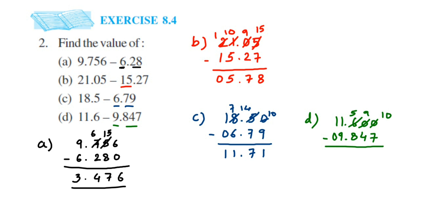This becomes 5, this becomes 9, and this becomes 10. 10 minus 7 is 3. 9 minus 4 is 5. 5 minus 8 — we cannot do it, so take a borrow; this becomes 0 and 5 becomes 15. 15 minus 8 is 7. Place the decimal point. 0 minus 9 — we cannot do it, so 1 becomes 0 and 0 becomes 10. 10 minus 9 is 1. So the answer is 1.753. The only key thing is to place the decimal properly, then write numbers from nearest to decimal and subtract. If you have any questions, drop a comment. Thank you for watching.